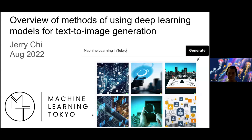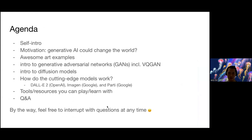Thanks for the intro. So here on the front page, I thought it would be appropriate to use text-to-image generation to generate the cover photos. Those images on the right are from DALL-E 2's online tool. The agenda is: we'll talk about the motivation, give some examples of the art, then cover background machine learning techniques that are the basic building blocks for these models, then dive into the actual models — DALL-E 2, Imagen, and Parti — and share some resources and have questions at the end.